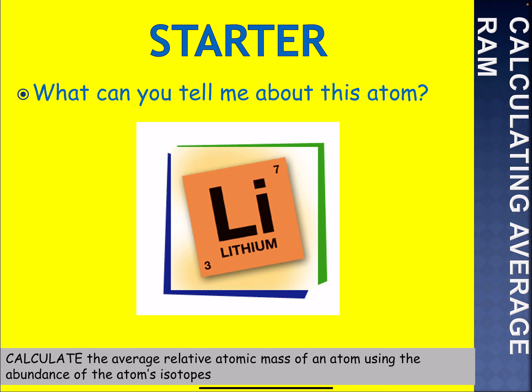Okay, so let's have a look. It's clearly the lithium atom. It's got an atomic mass of seven, atomic number three, and that tells me it's got three protons. And because it's an atom — a neutral particle — if it's got three protons, it will also have three electrons. To work out the number of neutrons: seven take away three, which is four neutrons.